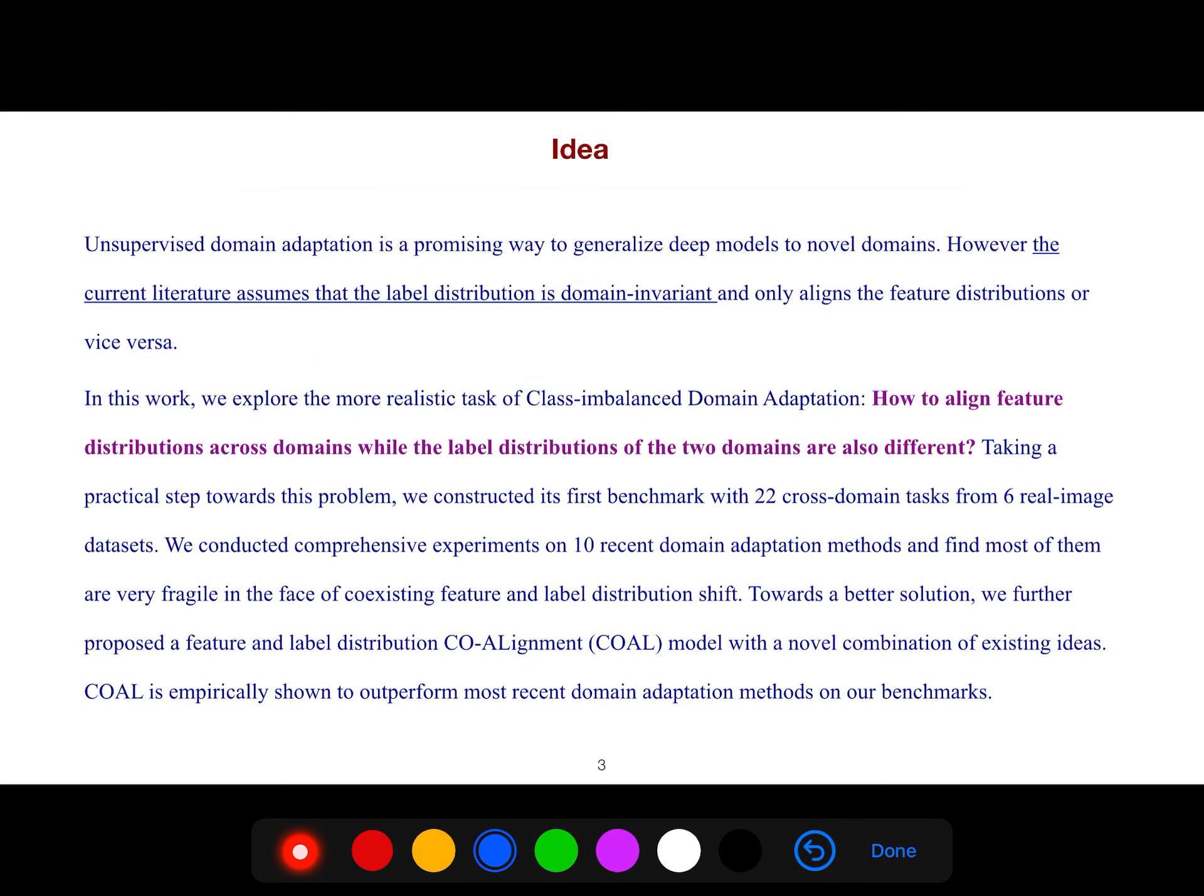Unsupervised domain adaptation is a promising way to generalize deep models to novel domains. However, the current literature assumes that the label distribution is domain-invariant and only aligns the feature distributions or vice versa. In this work, we explore the more realistic task of Class Imbalanced Domain Adaptation: How to align feature distribution across domain while the label distributions of the two domains are also different. This is the motivation of this paper.